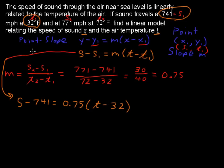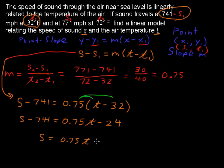Now we could say we're done, we have a linear model, but we want to make it S equals some function of T. So let's go ahead and solve for S. I'll distribute the 0.75 here and add 741. S minus 741 equals 0.75 T minus 24, that's 0.75 times 32. Add 741 to each side and S equals 0.75 T plus 717.